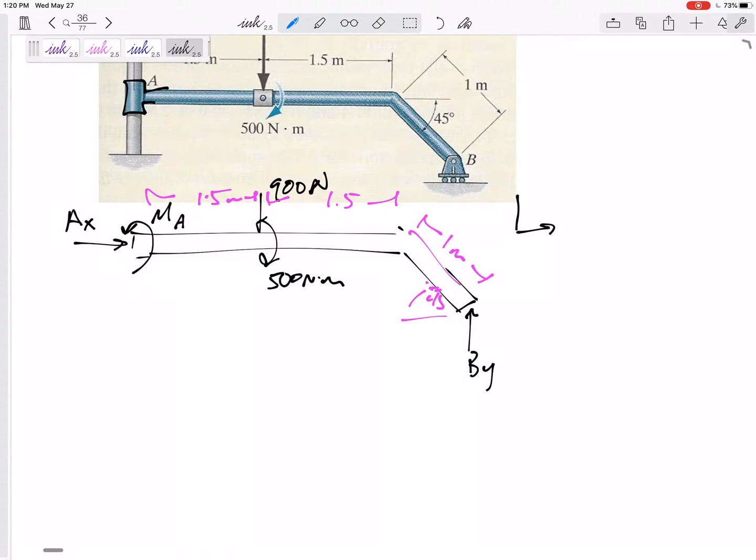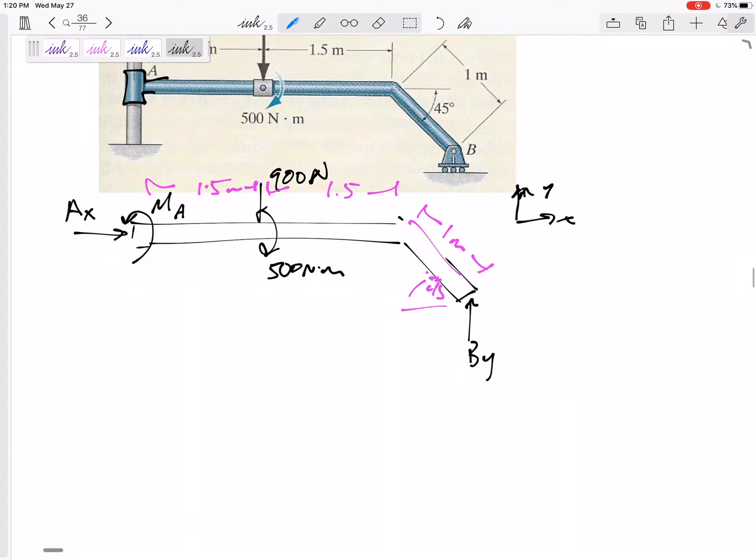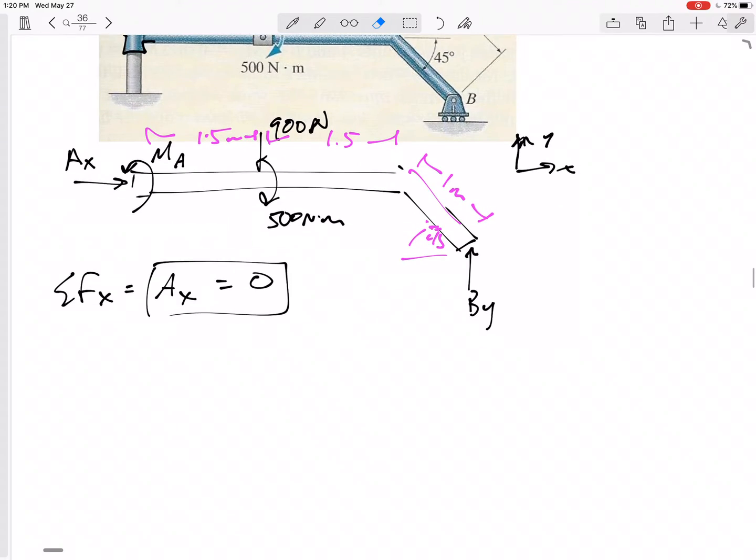And let me draw some axes. I think it makes sense to use my usual standard XY horizontal and vertical axes. So let's say sum of the forces in the X direction. I've got AX. That's it. There are no other forces in the X direction. AX is equal to zero. So I could have a force in the horizontal direction, but in this setup, I don't have one. That really just means that that beam, it's not pulling left or right. It's just kind of staying right there. So it's okay if your forces come out to be zero sometimes.